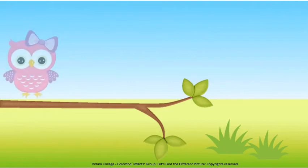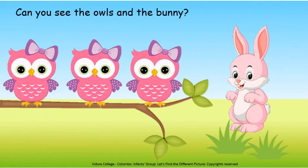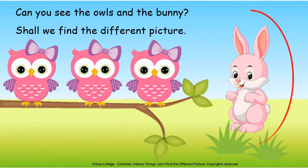My children, here see. Can you see the owls and the bunny? There are three owls and only one bunny. Shall we find the different picture? I know you can find the different picture easily. The three owls are similar. But does the bunny look like the owls? No. Then, what is the different picture here? The different picture is the bunny. Right? Very good, children.